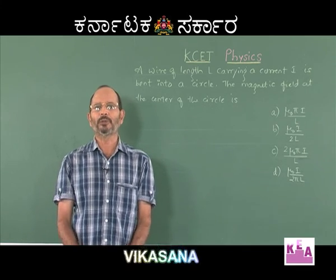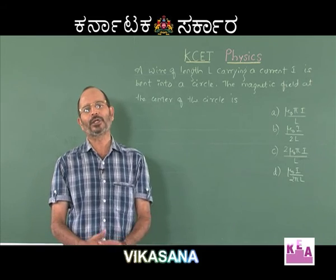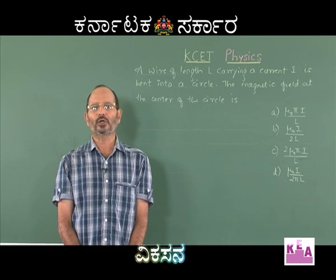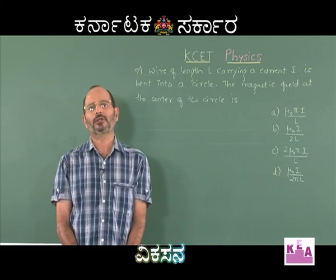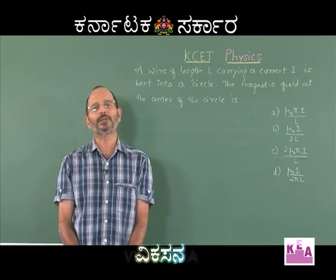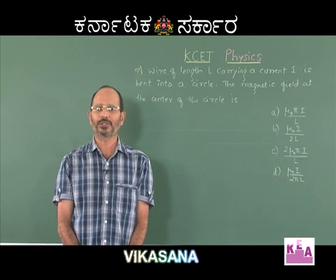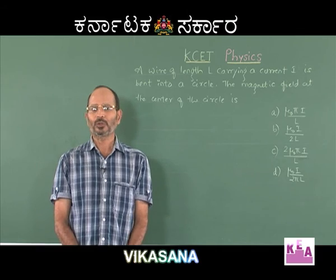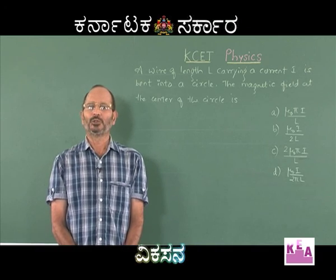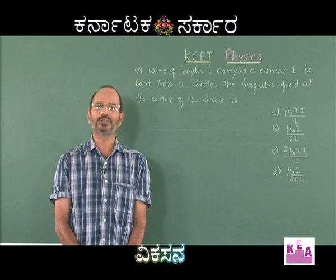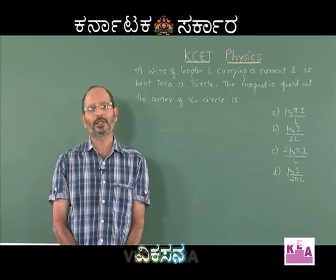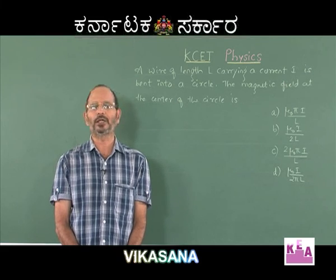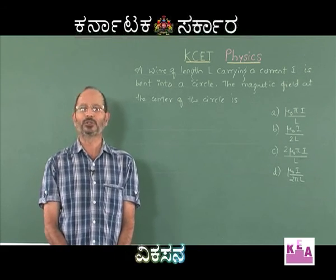The cross product is a vector quantity and there is some direction associated with the answer. So qv×B is a vector quantity, and its magnitude is qvB sinθ, where theta is the angle between v and B. Even though the charged particle has velocity and there is a magnetic field present, the force can still be zero provided the velocity is either parallel or opposite to the magnetic field.